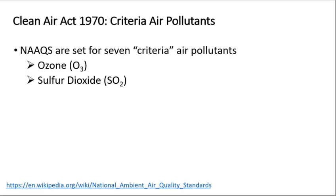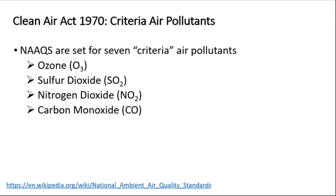Another criteria air pollutant is sulfur dioxide (SO2), connected to coal combustion. Another is nitrogen dioxide (NO2), seen in photographs as the brown gas covering cities due to its absorption of blue sunlight. Nitrogen dioxide is a portion of NOx and is a major part of air pollution from motor vehicles and other combustion sources. Another criteria air pollutant is carbon monoxide, also a major part of motor vehicle and other combustion emissions.